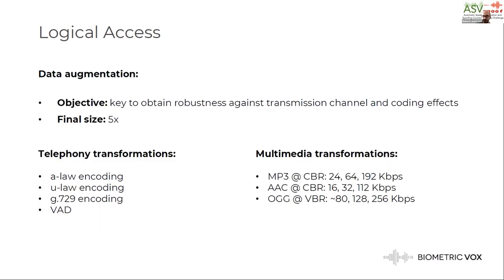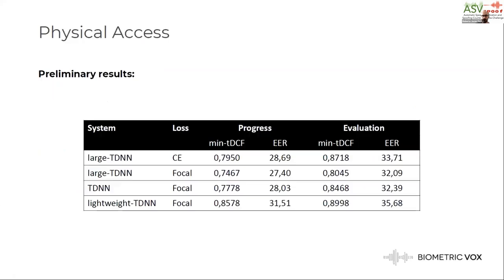For data augmentation, we took each sample and applied a number of transformations to obtain robustness against the transmission channel and coding effects present in the evaluation data. These transformations are grouped into two categories: telephony and multimedia. For telephony transformations, we use commonly used codecs in telephony scenarios and also applied aggressive energy-based voice activity detection to remove silence portions, as some switchboard configurations do. For multimedia transformations, we use three well-known codecs at different bit rates, both constant and variable.